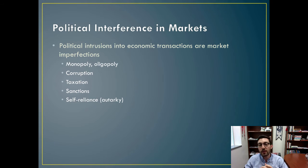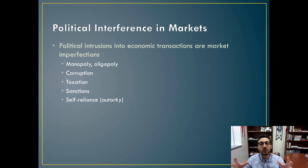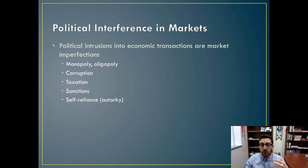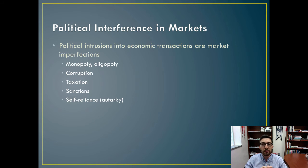Another market imperfection is self-reliance, or what is known as autarchy — where a country decides it doesn't need any other countries and will produce everything on its own. But most countries aren't good at doing everything. This is one of the ideas underlying comparative advantage: you are more effective and efficient at producing some goods than others, whether because of labor, technology, or natural resources. By relying only on yourself, you introduce a market imperfection because other countries might be able to provide a good more efficiently, freeing your resources to produce what you are best at.